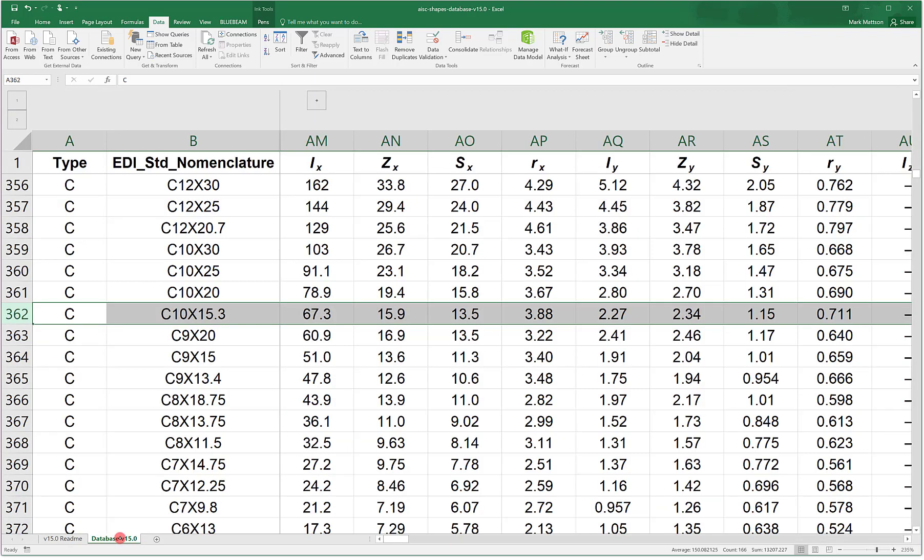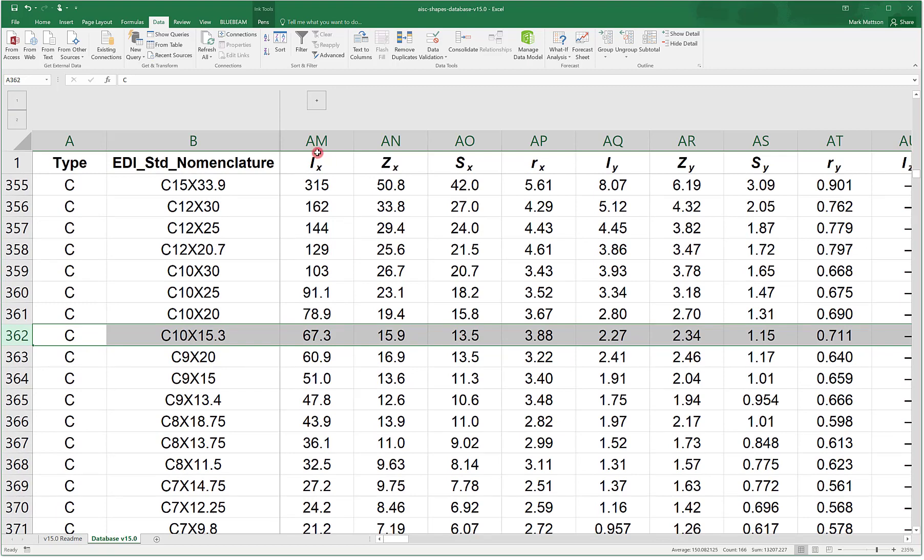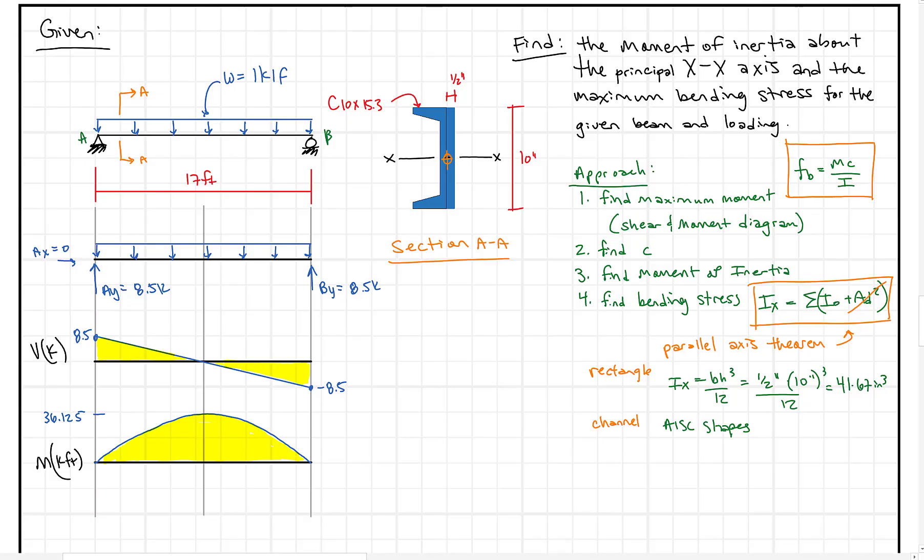So I can come to the database and I've already pulled this one up here, but a channel 10 by 15.3 has a moment of inertia IX about the principal axis at its own center of gravity of 67.3. So I can come back here and just write that in. I didn't have to go calculate it, it's just given. This is 67.3 inches to the fourth. I made a mistake, inches cubed is incorrect, it's inches to the fourth here.